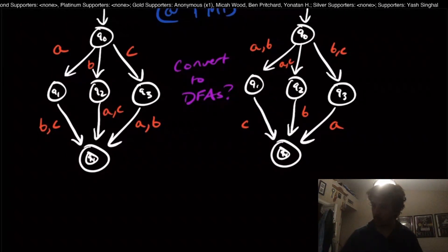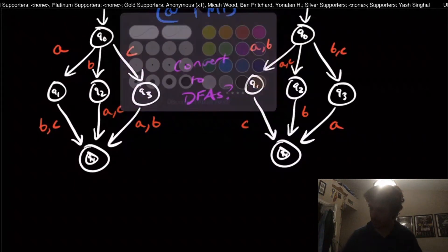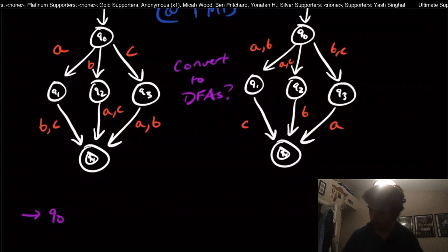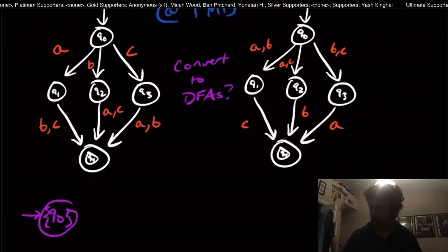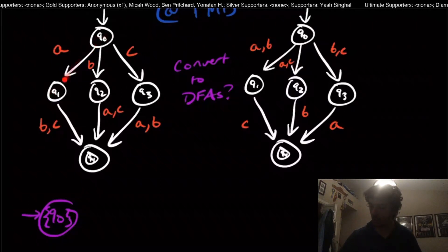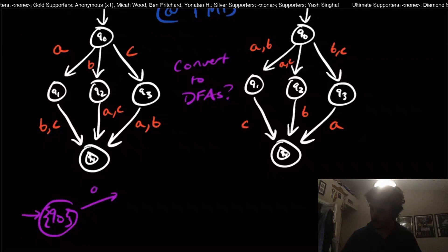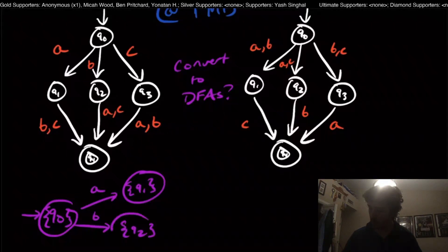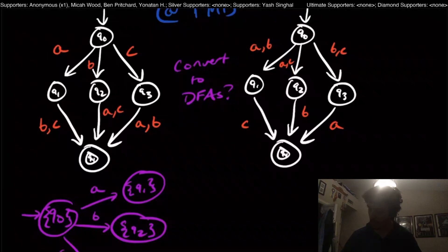We start by making the DFA, which begins with just the set containing q0. There are no other states here because there are no epsilon transitions. On input 'a' we can only go to q1, on input 'b' we can only go to q2, and on input 'c' we can only go to q3.